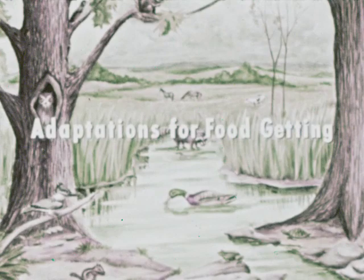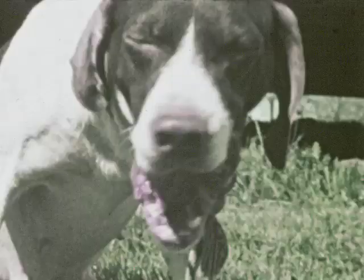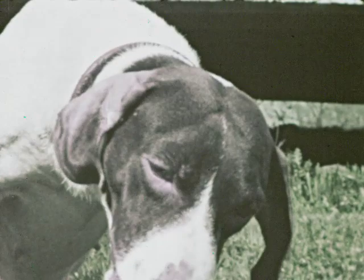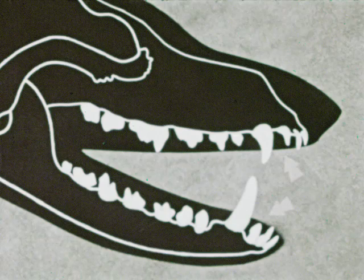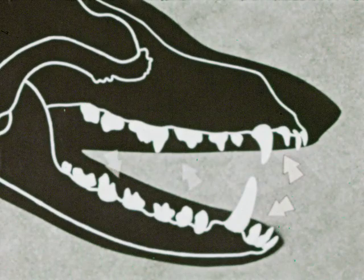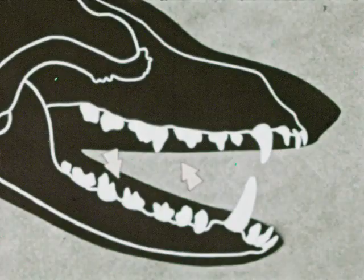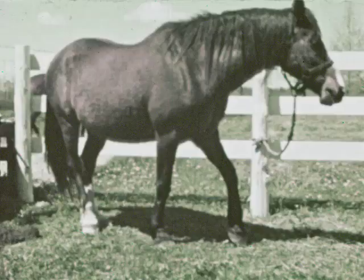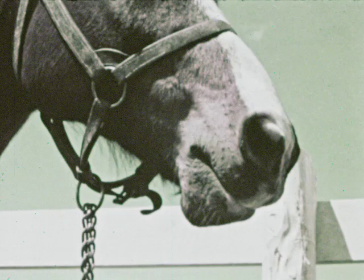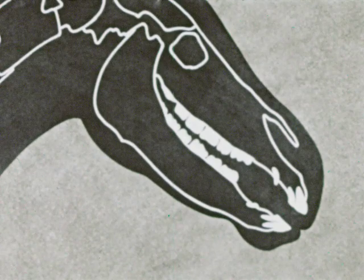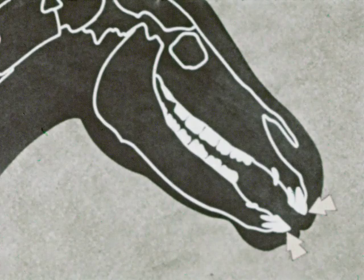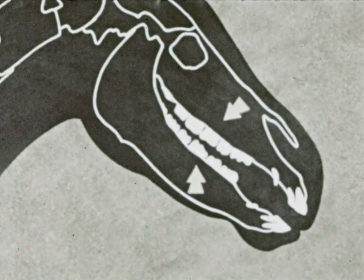We have seen some plant and animal adaptations for protection. Now let's see some adaptations for food getting. Dogs are meat-eating animals — their teeth are adapted to tearing and chewing meat. This diagram of a dog's teeth shows the sharp pointed front teeth suited to tearing meat, and back teeth used to grind meat into pieces small enough to swallow. However, many large four-footed animals, like the horse, are plant eaters. The teeth of the horse are different from those of meat-eating animals. A horse has sharp front teeth which are used to bite off grass, and broad, flat back teeth well suited to grinding grass and other plants before they are swallowed.